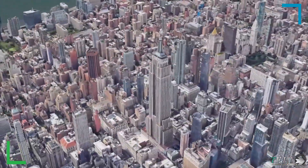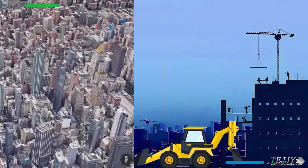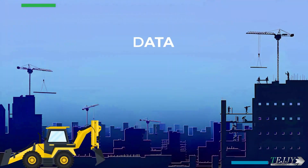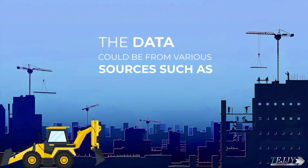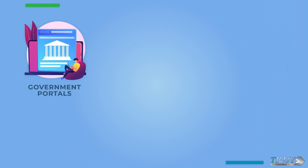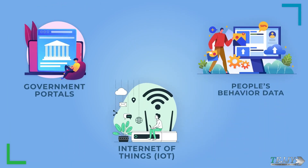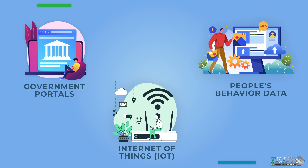This replica is constantly being fed with real-time data. The data for city information modeling could be from various sources, such as government portals, Internet of Things (IoT), or even people's behavior data, like pedestrian movement.